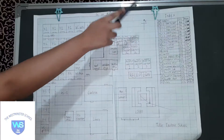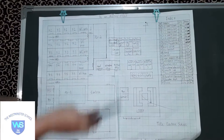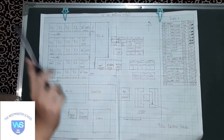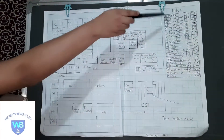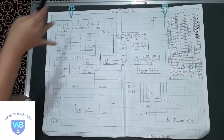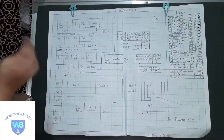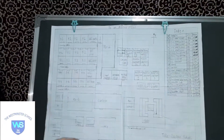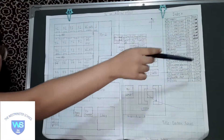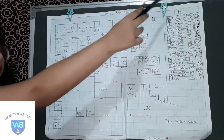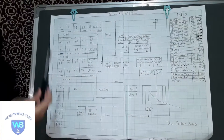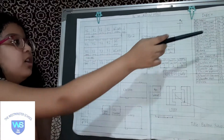You can see here that we have the 2D model over here, and we have the index. We have the details, quantity, and area given here. The index has given the area, quantity, and details of all the objects which are in the layouts or blueprints.